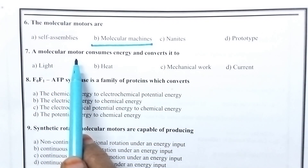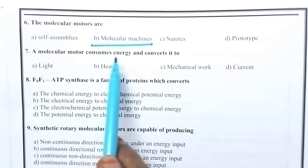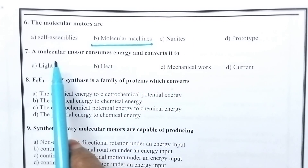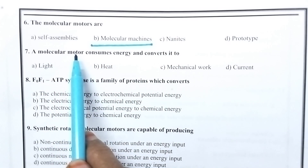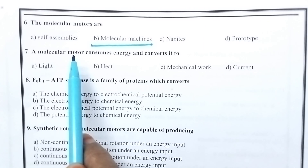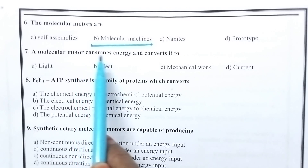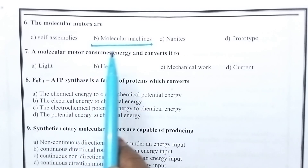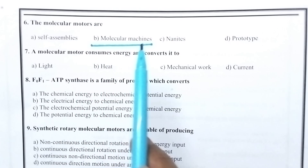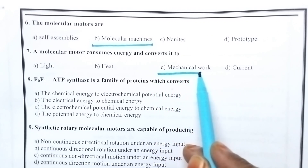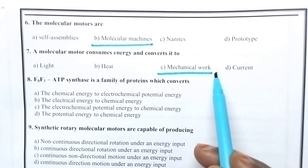A molecular motor consumes energy and converts it to — molecular motors are responsible for the production of mechanical work. They are capable of consuming energy and converting it to mechanical work. So option C is the right answer.